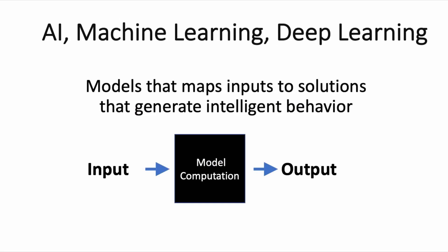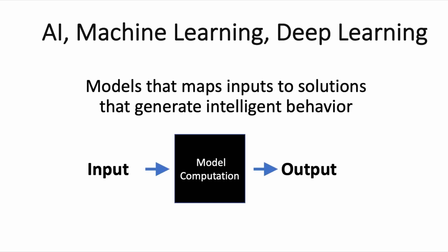AI, machine learning, and deep learning are all models that map inputs to solutions for information processing problems that generate intelligent behavior. In traditional AI, this mapping from inputs to solution was completely pre-specified. We tell the AI what features in the world are important and pre-specify the exact computations for mapping features to an output that is a solution to an information processing problem.